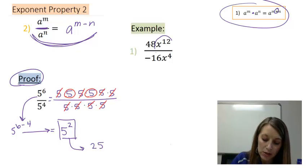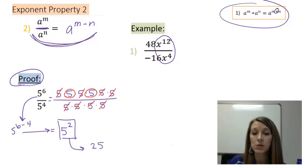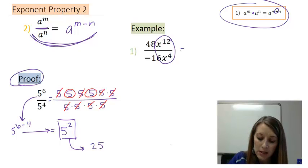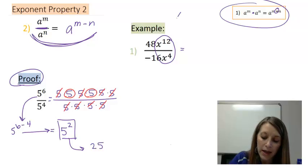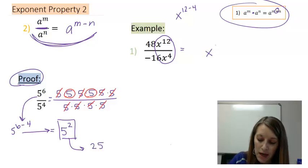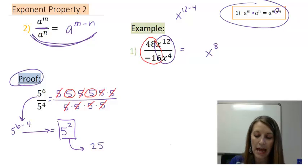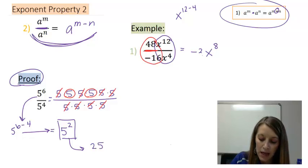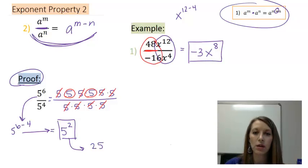So the first thing that I'm going to start with here is my x bases, because that's what our emphasis is on this video. x to the twelfth over x to the fourth. Well, I can follow my property and simplify it as x to the 12 minus four, which gives me x to the eighth. But I also need to figure out how does this 48 divided by negative 16 work? Well, that's a basic division problem. What is 48 divided by negative 16? And that comes out to be negative 3, because 16 goes in evenly to 48 three times. So my correct answer here is negative 3x to the eighth.